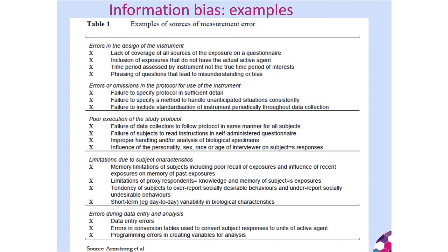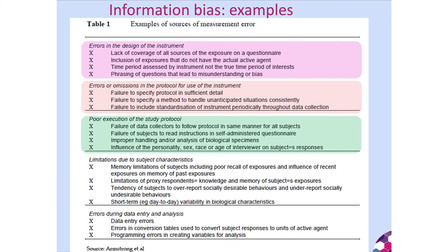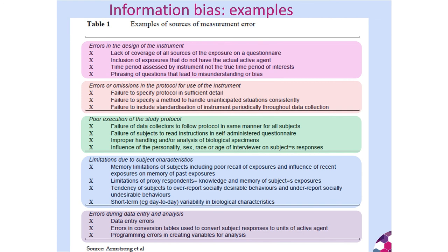There are five main categories of error in measurement instruments: errors in the design of the instrument itself; errors in the protocol or training for how researchers or participants use it; errors in how the study is implemented more broadly; limitations of participants; and errors when entering or analysing data on a computer.